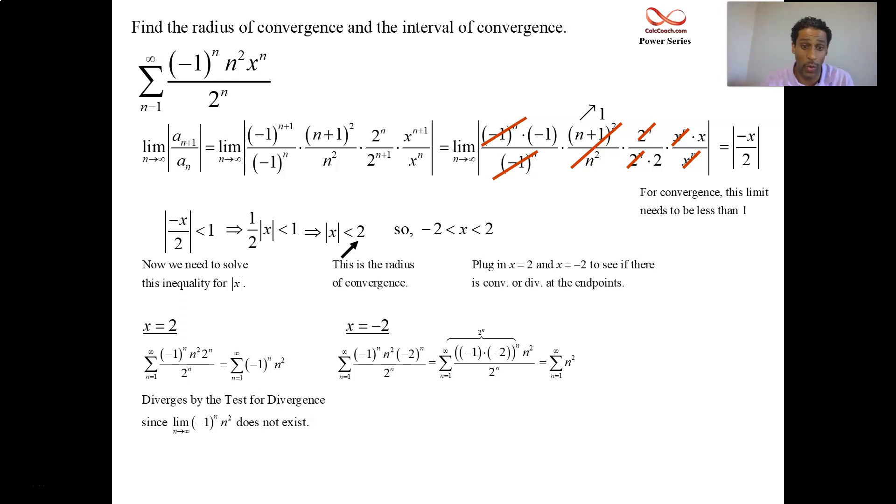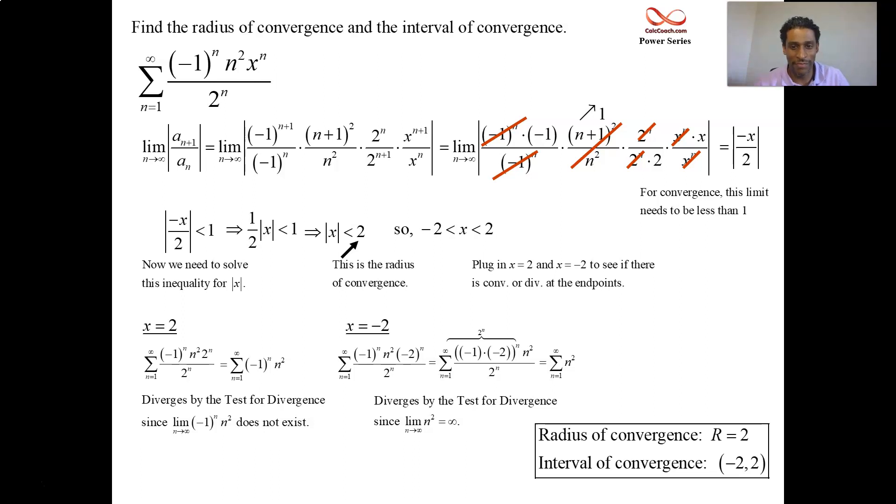So now we're just talking about adding up these squares. 1 plus 4 plus 9. No way that's going to converge. Test for divergence. The limit's infinite. Divergence at the endpoints, so use parentheses, and the interval of convergence is negative 2 to 2.